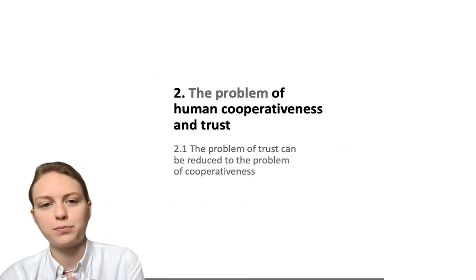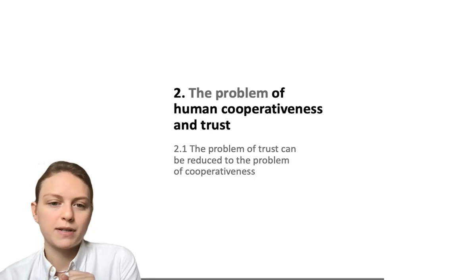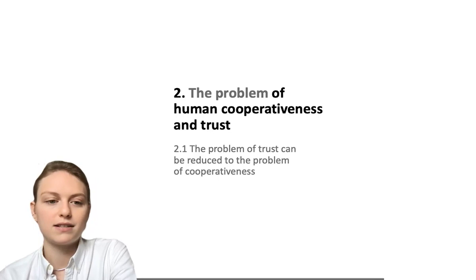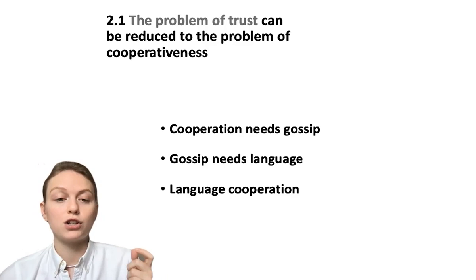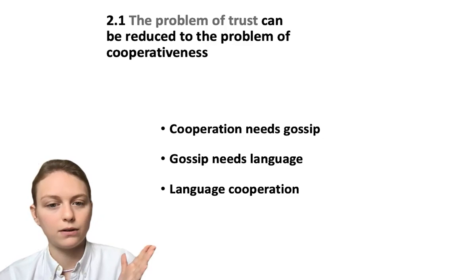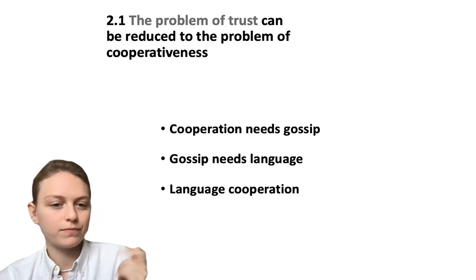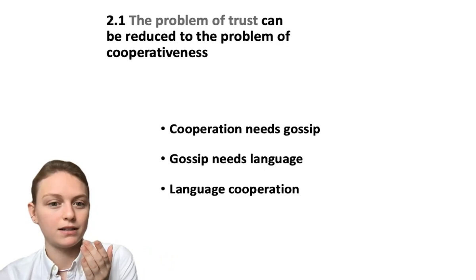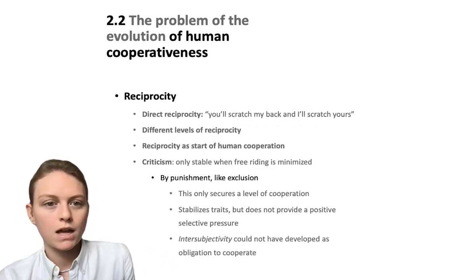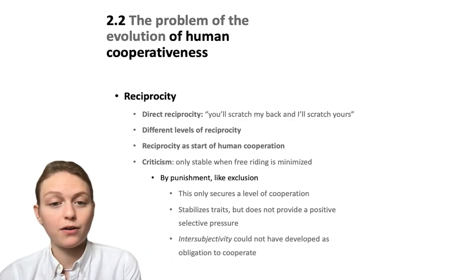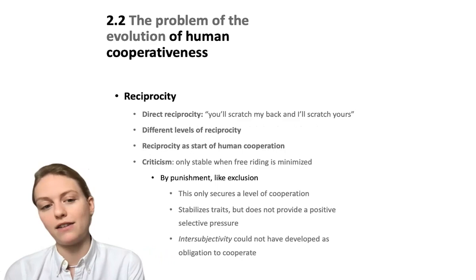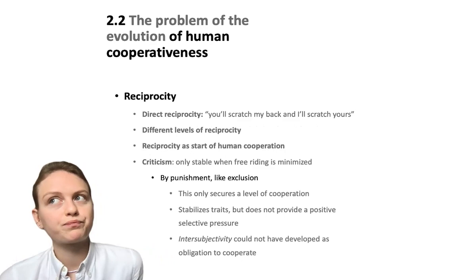Now to the second part: the problem of human cooperativeness and trust. The problem of trust can be reduced to the problem of cooperativeness. The argument is: cooperation needs gossip — gossip is the only way to stabilize cooperative behavior. But gossip already needs language, which seems to entail that language needs some cooperation. This is, of course, a problem since cooperation needs gossip and language needs cooperation.